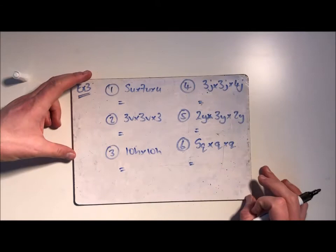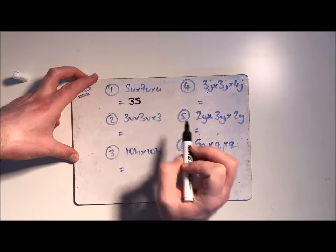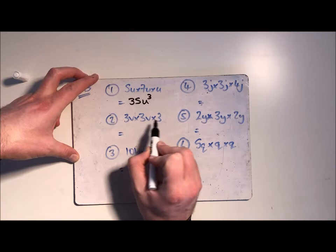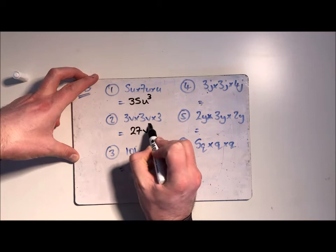Now these ones are a little bit harder so I've spaced them out a bit more so hopefully you can see them. We've got 5 sevens first of all are 35, and then u times u times u, so when you multiply something by itself it was squared and then by itself again it was cubed, so it's 35u cubed. 3, 3, 3, so 3 times 3 times 3. 3 threes are 9 and then 9 times 3 is 27, and then v times v is v squared.